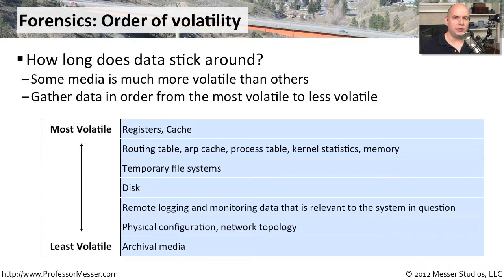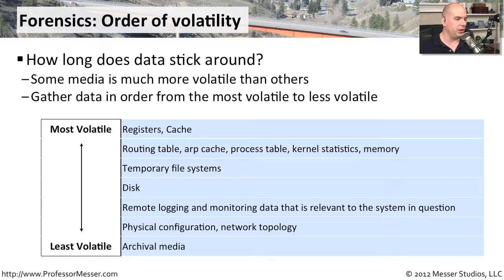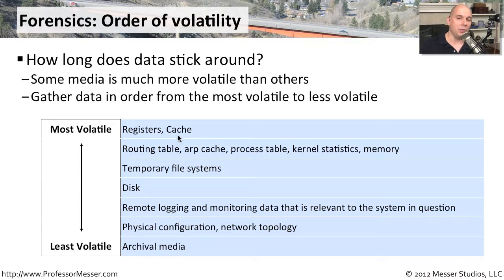There's a concept in digital forensics called the order of volatility. Not all data sticks around for the same amount of time — data ages out depending on where it happens to be in a system. One of the most volatile, most short-lived types of data are within the memory and registers of your processors themselves. The cache has data that's only going to be there for a very short period of time.